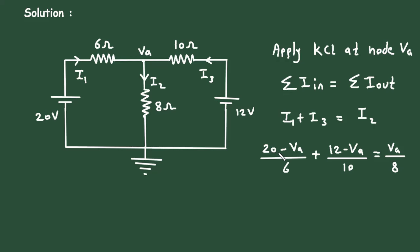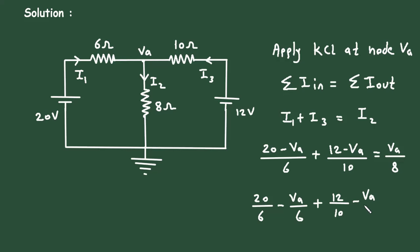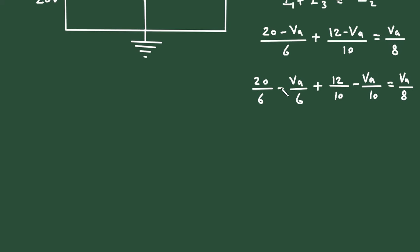Now if we simplify this, it will be 20 by 6 minus VA by 6 plus 12 by 10 minus VA by 10, and this is equal to VA divided by 8.